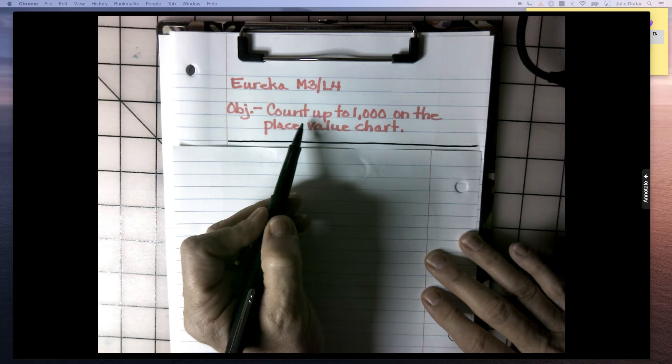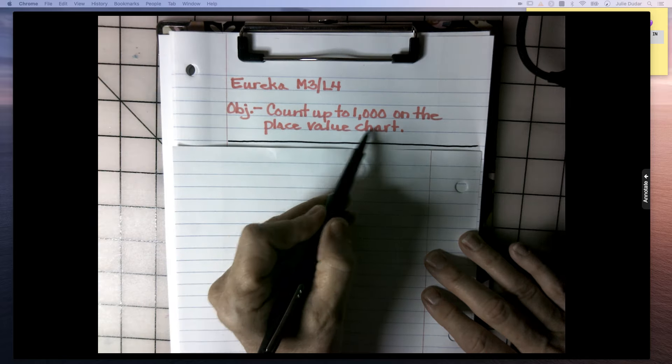The objective is count up to 1,000 on the place value chart.